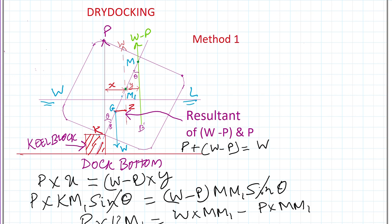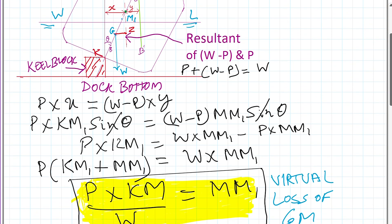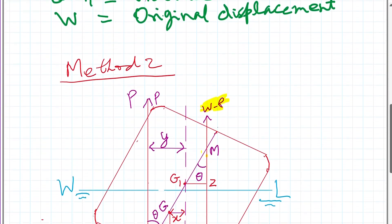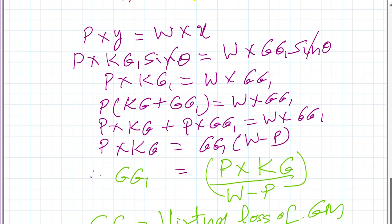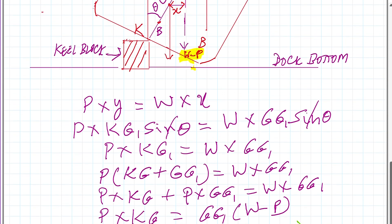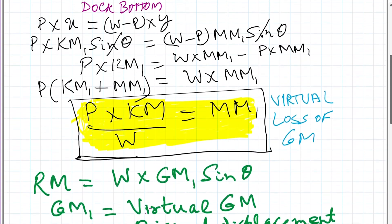In this video we will derive the formula for virtual loss of GM during the critical period in a drydock. There are two methods: one is P·KM/W (where the metacenter is shifting towards the center of gravity), and another is P·KG/(W−P). Both methods are acceptable, and we will see how they are derived to calculate the virtual loss of GM during the critical period.